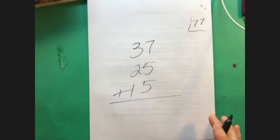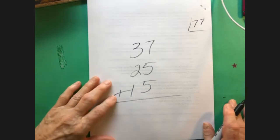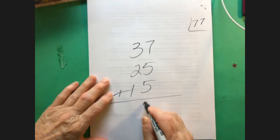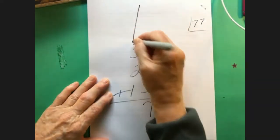And I'll say what do you do first? And they go, well you add the ones first. What do you get? 17. And I'll say what do you do? They say put down the seven, carry the one, and I do that.